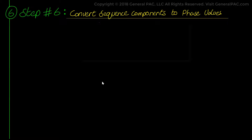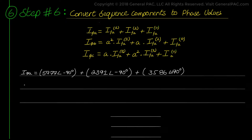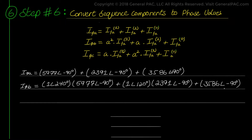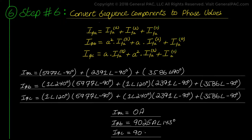Proceeding to Step 6, we convert the sequence component values to phase current values using the three legacy transformation equations. Plugging in the values of the A operator and our calculated sequence current values, the calculator gives us: phase A current equals zero; phase B current equals 9,025 amps at angle 143 degrees; and phase C current equals 9,025 amps at angle 36.58 degrees.